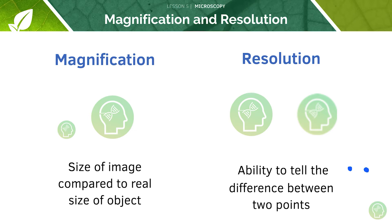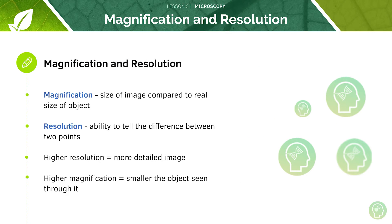Both resolution and magnification are important. Resolution is a key factor in the quality of an image taken by a microscope, whilst magnification determines the objects that you can actually see down the microscope — for example, cells. The higher the magnification of the microscope, the smaller the object that can be seen through it. We'll be looking at types of microscope later on in this tutorial.